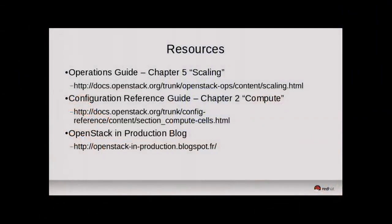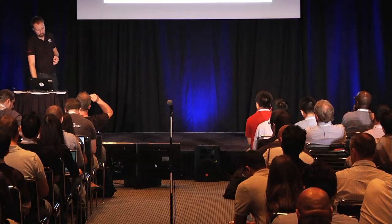Some resources I referred to in this discussion: the Operations Guide has good content on all the concepts we talked about today and the differences between them. The configuration reference guide — particularly within the compute chapter — has good content on how to set up and deploy cells. Some guys from CERN have done a great job of recording their experiences with cells in a large-scale OpenStack deployment, and I'd highly recommend reading that if you're interested in cells concepts and tricks for pushing other services down.